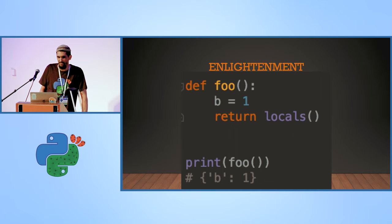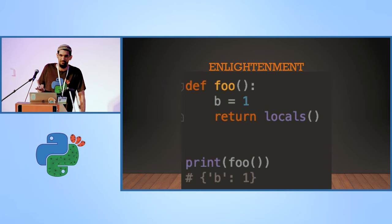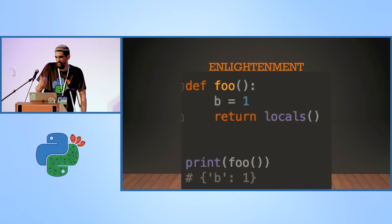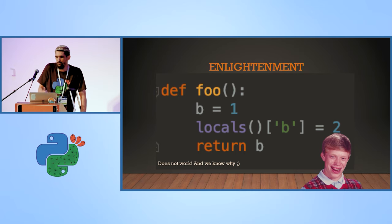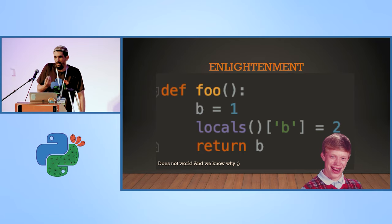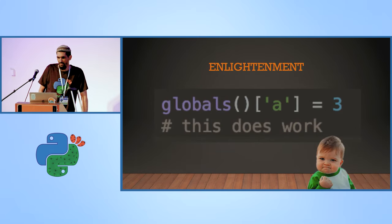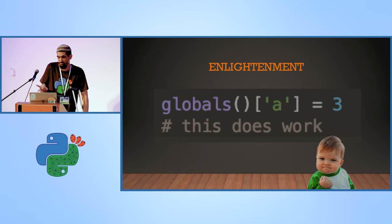We have the locals() function that returns the local scope as a dictionary. But I just said it's not a dictionary. What it does under the hood: it builds one — it looks at the array, goes one by one, and builds a dictionary. So this function is a bit costly if the scope is big, and there are side effects. You can't mutate it — if you mutate the local scope that you got, it's not really the local scope, just a copy. The bytecode won't look there. The globals() function works differently — it just returns the pointer to the same module dictionary, so you change the dictionary, you change the module scope. It's the same.